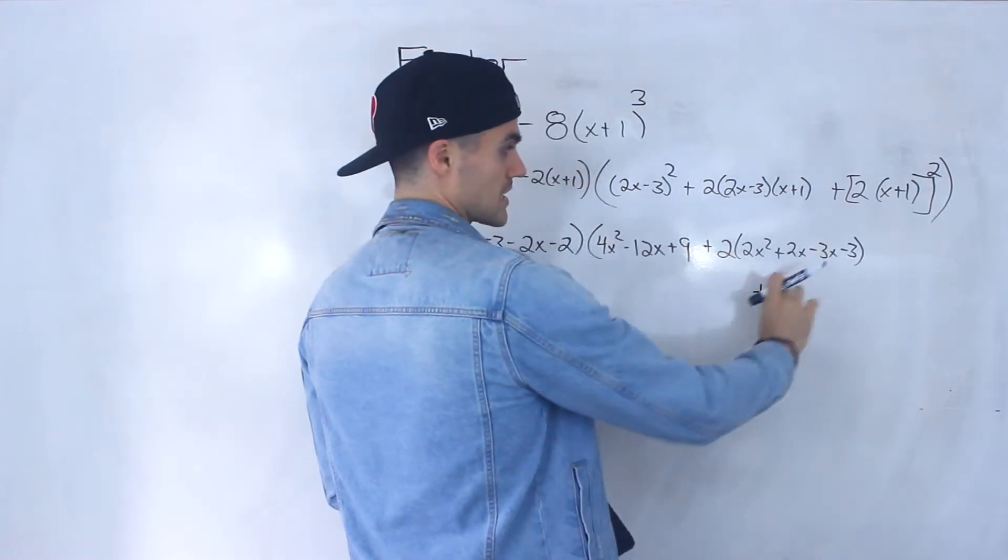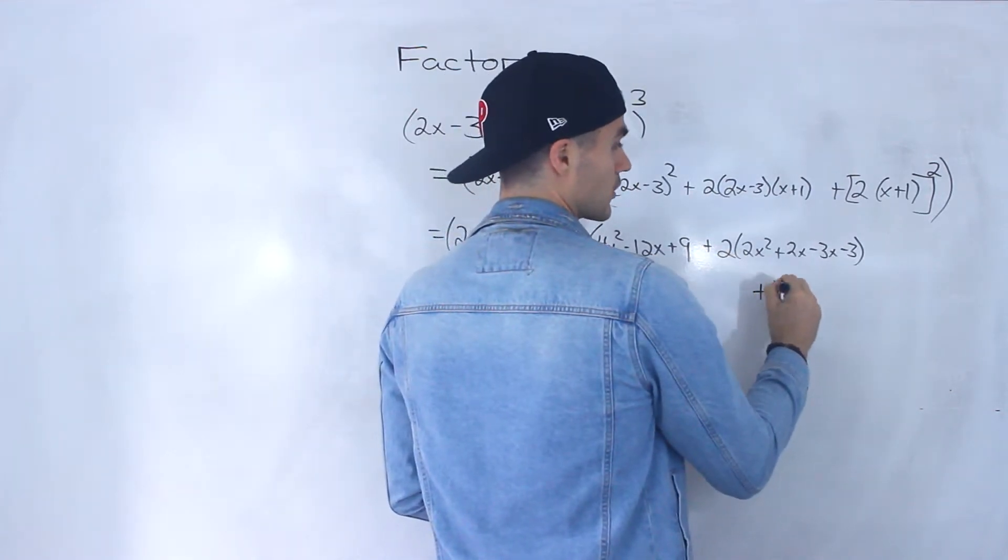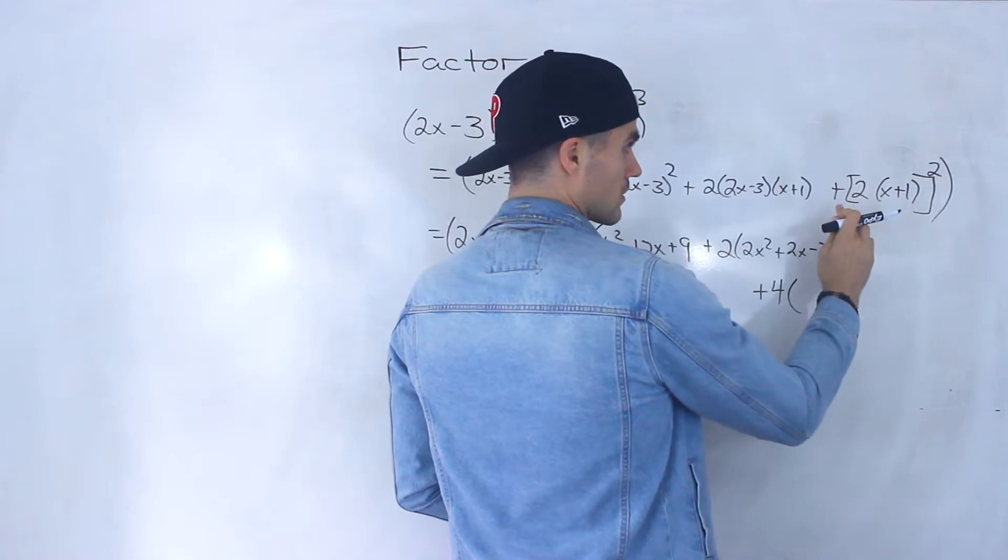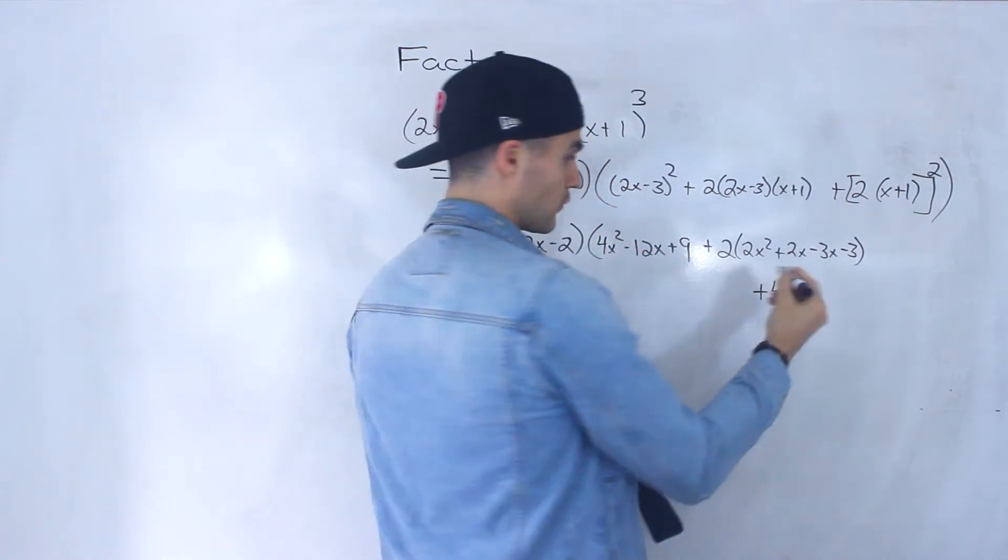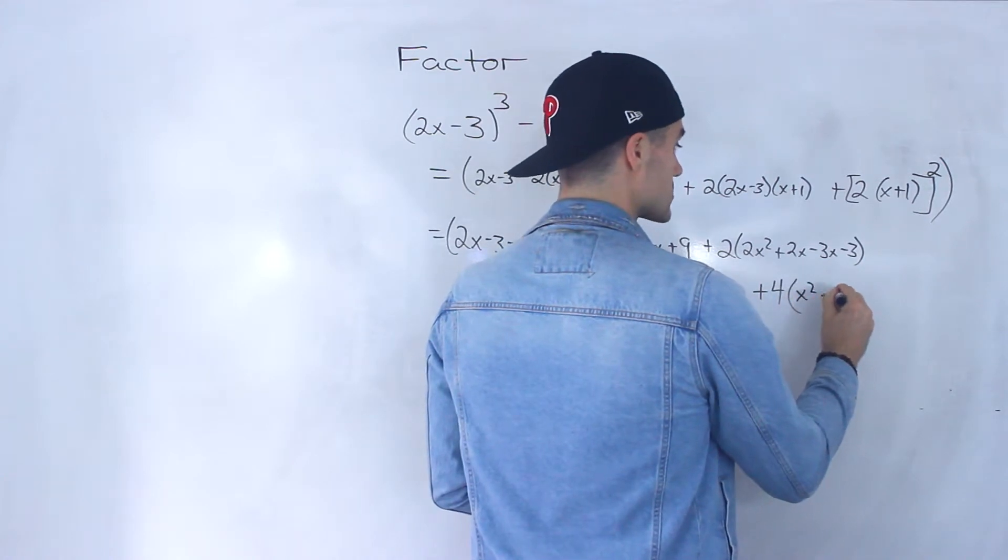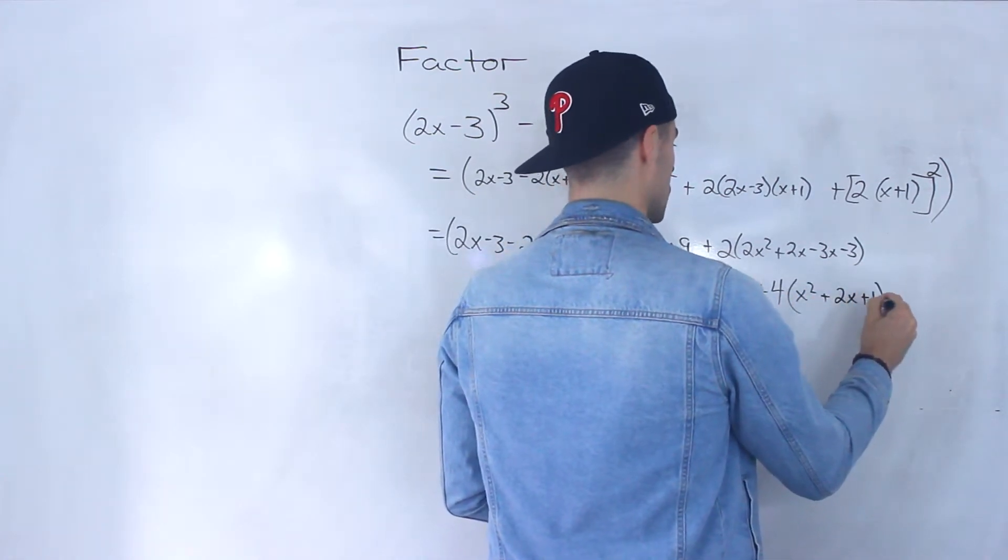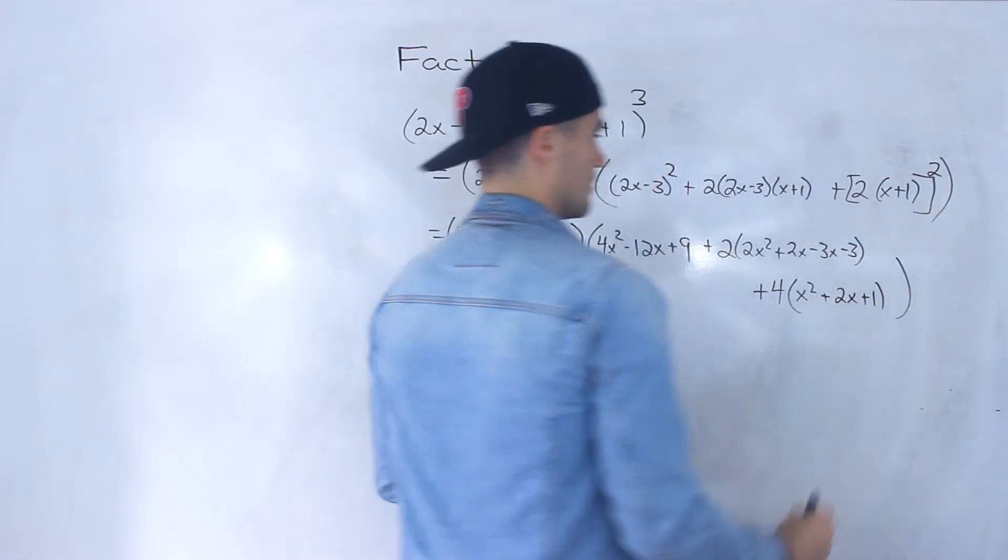This is still all the same line, but I'm going to start it here just because I'm running out of room. So we'd have 4, 2 squared is 4, and then we'd have (x+1)². Foil that out, you'd have x² + 2x + 1, like that.